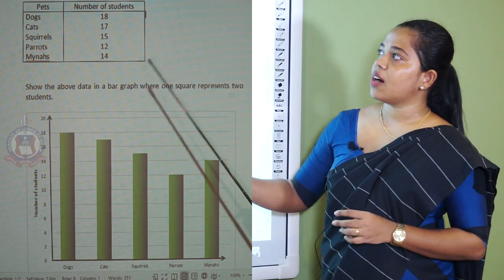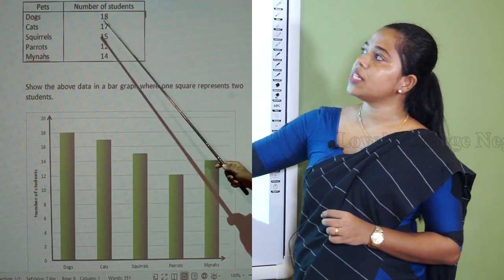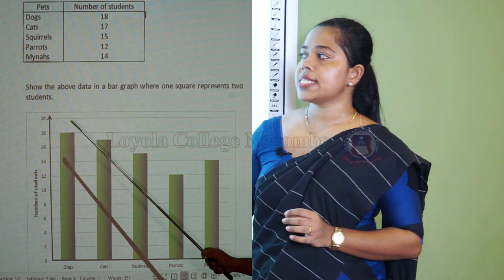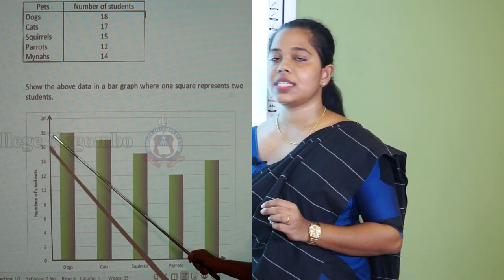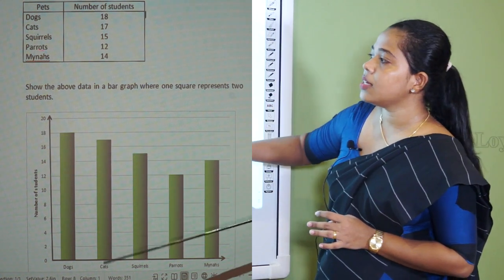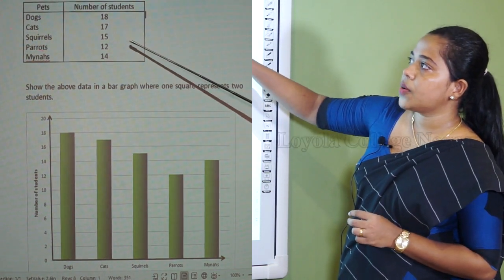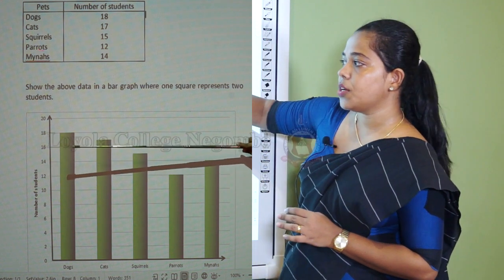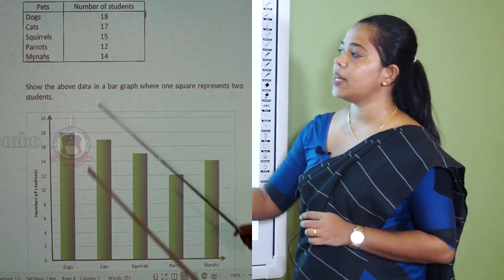In this graph, the bar for dogs is marked at 18. For cats it is 17 — though 17 is not explicitly marked, you know it is between 16 and 18. By keeping the ruler, you can take the measurement and draw the bar up to 17. For squirrels it is 15, which is between 14 and 16, so you keep the ruler and draw the bar up to 15. Likewise, you can complete the rest of the graph.